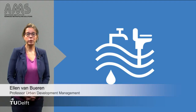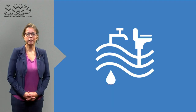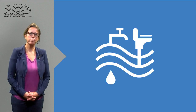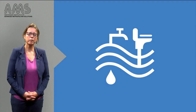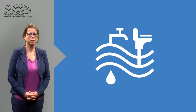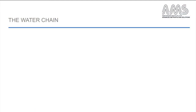Welcome to this week about the urban water chain. Before I give an overview of the content of this week, let's first have a look at what we mean by the urban water chain. When we talk about the urban water chain, we actually talk about basic universal needs, because in short, the urban water chain is about drinking water provision and sanitation.